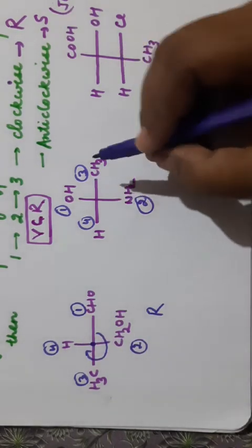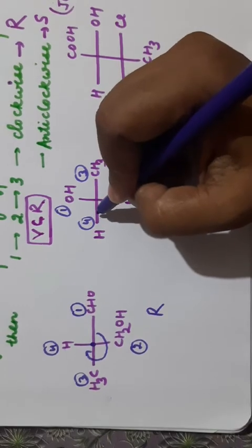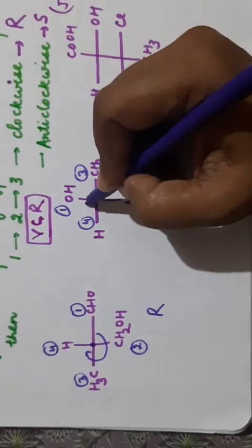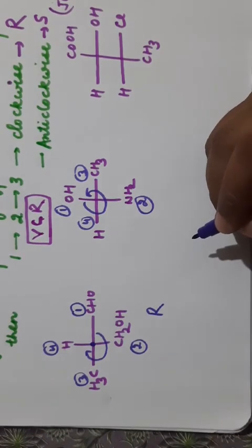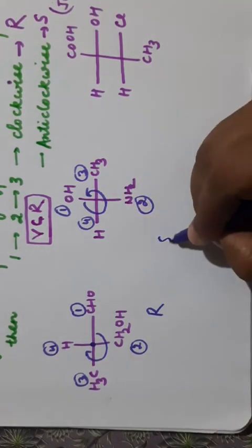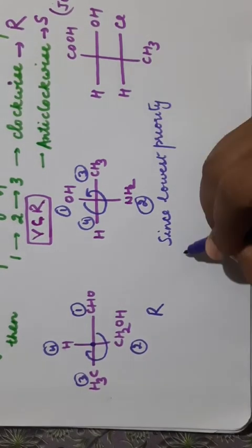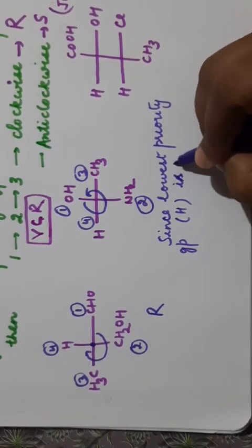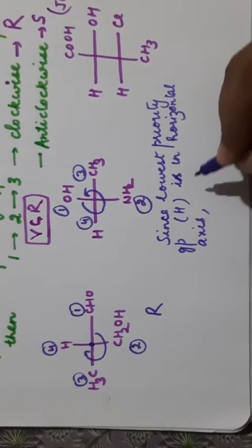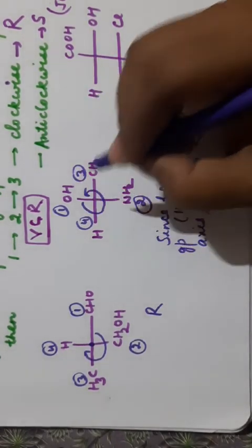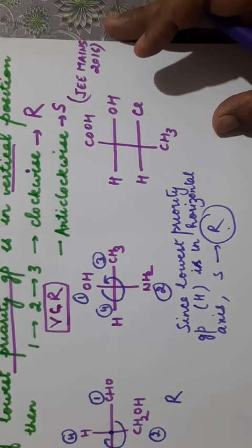In another example, the lowest priority group (hydrogen) is in the horizontal position. Moving 1→2→3 (ignoring 4 if it comes in between), we get an anti-clockwise rotation, which would suggest S configuration. However, since the lowest priority group is on the horizontal axis, we must reverse the configuration: S becomes R. So the configuration here is R.